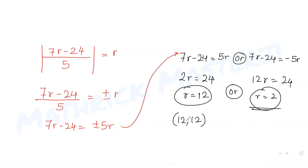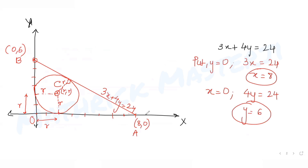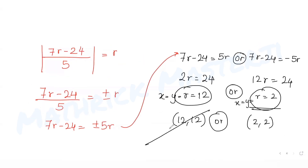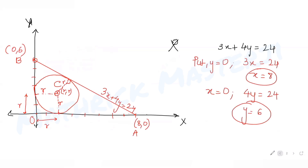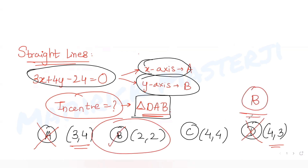Since x and y both equal r, the two candidate centers are (12, 12) and (2, 2). However, (12, 12) lies far outside the triangle, and the incenter must lie inside the triangle. So we reject r = 12. The valid incenter coordinates are (2, 2), which matches option B — the correct answer.